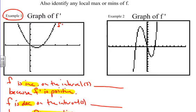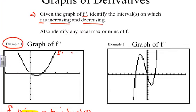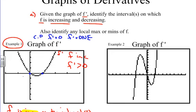In example number one, to answer the question of which intervals f is increasing or decreasing — f is increasing if f prime is greater than zero. So let's look at the graph and determine where it's greater than zero. We have to find the critical points. Critical points are when f prime equals zero, or when f prime doesn't exist. Here and here are approximately where our critical points are: at x equaling zero and x equaling one.